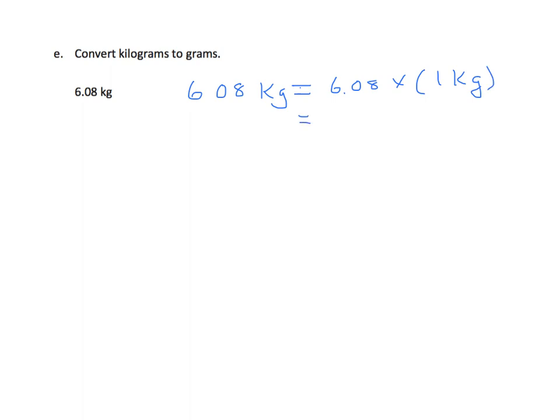And that's the same as 6.08 times what? Well, how many grams are in a kilogram? That would be 1,000. So we're making that connection between these two units. So now we have to multiply that out.